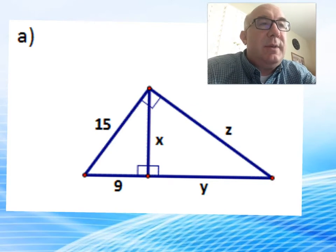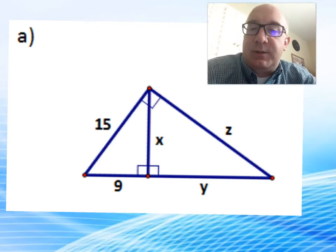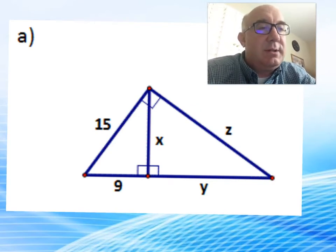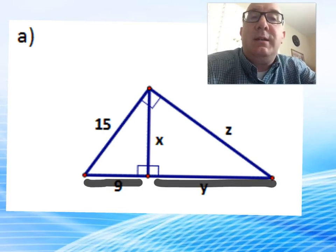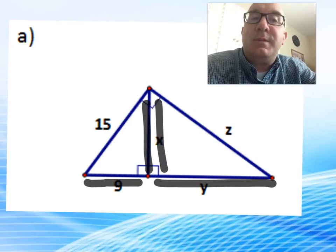The last geometric mean deals with the altitude, and it looks a bit like this. It says 9 times y equals x times x.